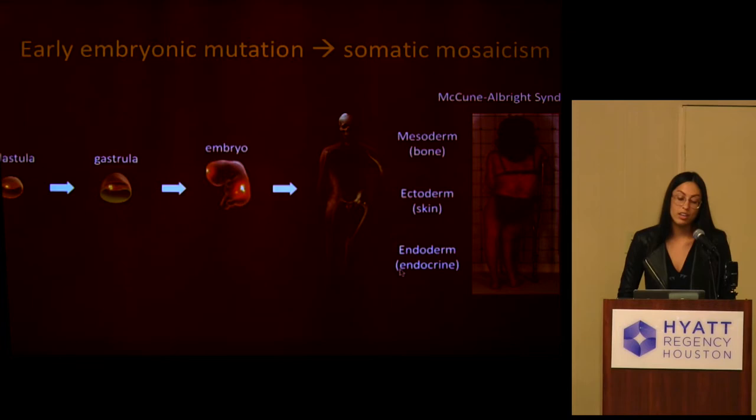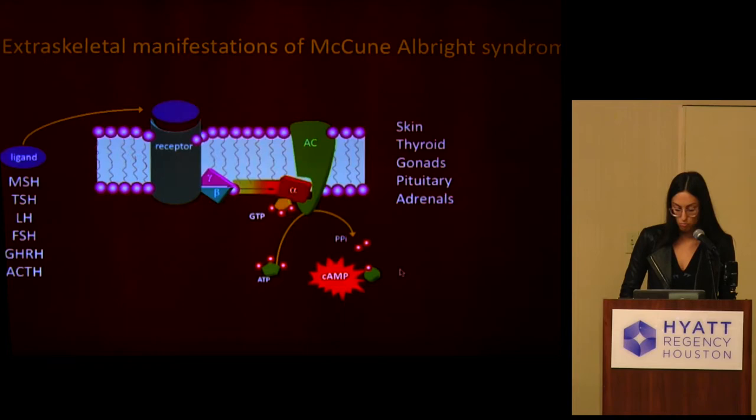If the mutation occurs early enough during embryogenesis, prior to gastrulation and prior to the formation of the trilaminar disc, you can get involvement of all three germ layers. This is what we call McCune-Albright syndrome, or MAS. In McCune-Albright syndrome you have the FD lesions of the bone arising from the mesoderm, as well as findings in the skin and the endocrine organs arising from the ectoderm and the endoderm respectively.